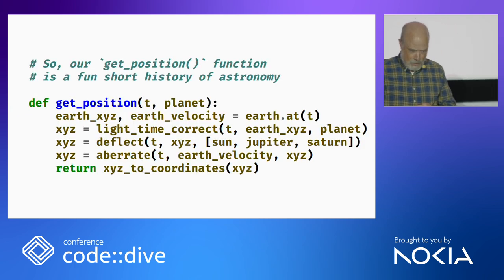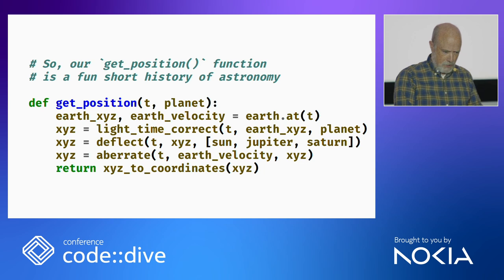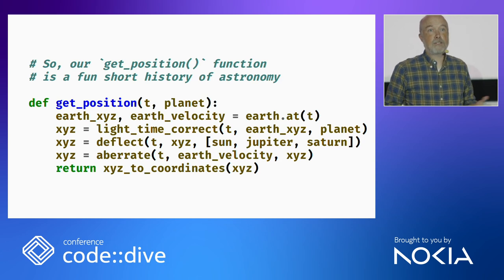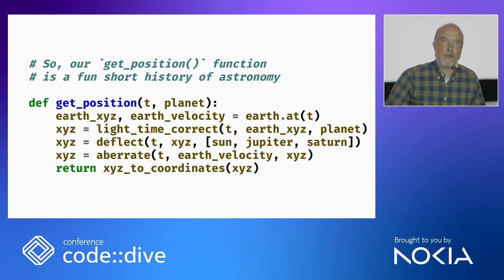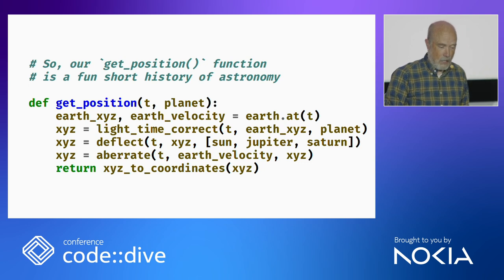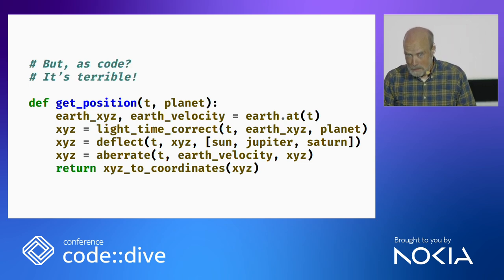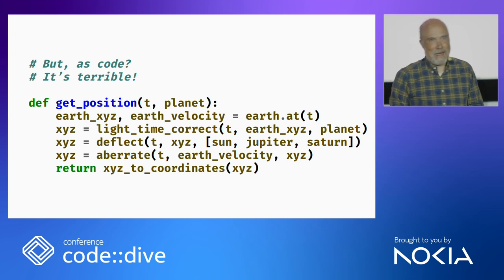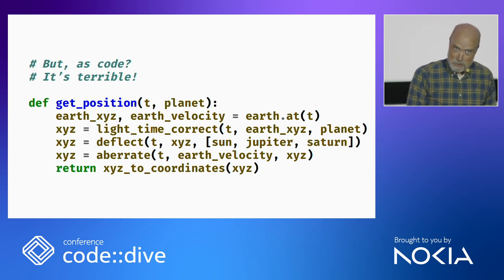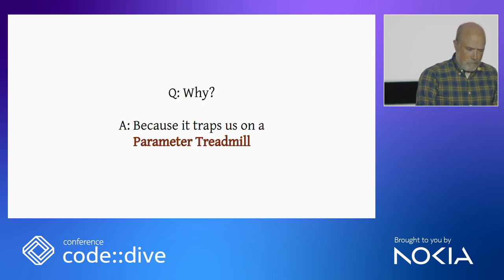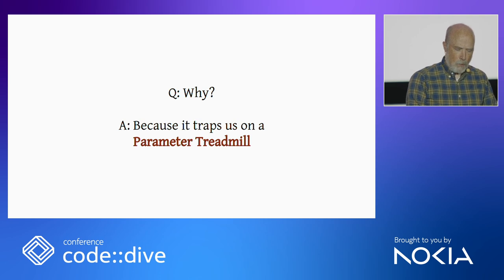Our get_position function is, in one sense, a fun short history of astronomy — light-time correction, deflection, aberration, all the things our species had to learn about light to plan accurate observations. But as code, it's pretty terrible. And this is a software conference. Why is it terrible? Because it traps us in what I will call a parameter treadmill.